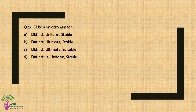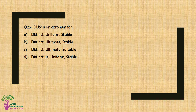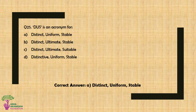Question No. 25: DUS is an acronym for — Option A: Distinct, Uniform, Stable, Option B: Distinct, Ultimate, Stable, Option C: Distinct, Ultimate, Suitable, or Option D: Distinctive, Uniform and Suitable. The correct answer is Option A — Distinct, Uniform, Stable.